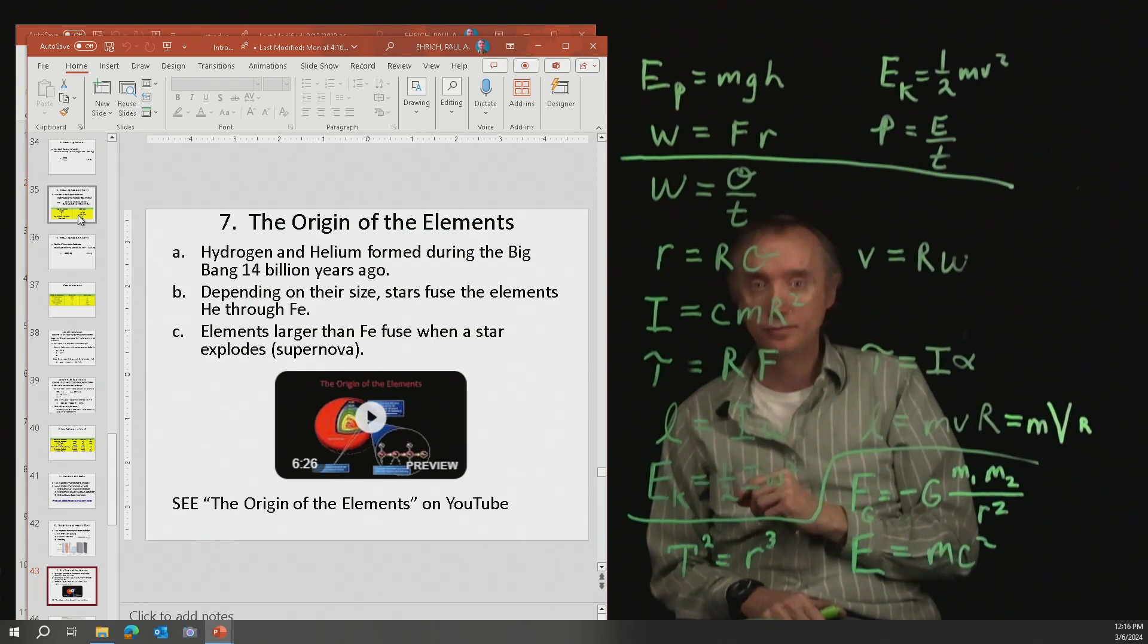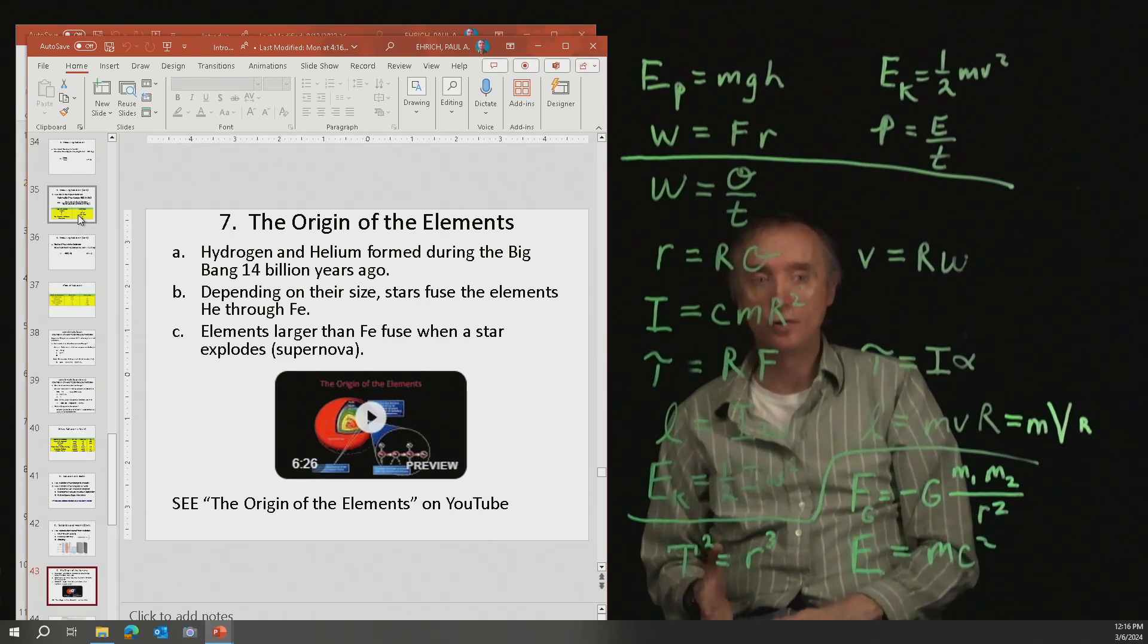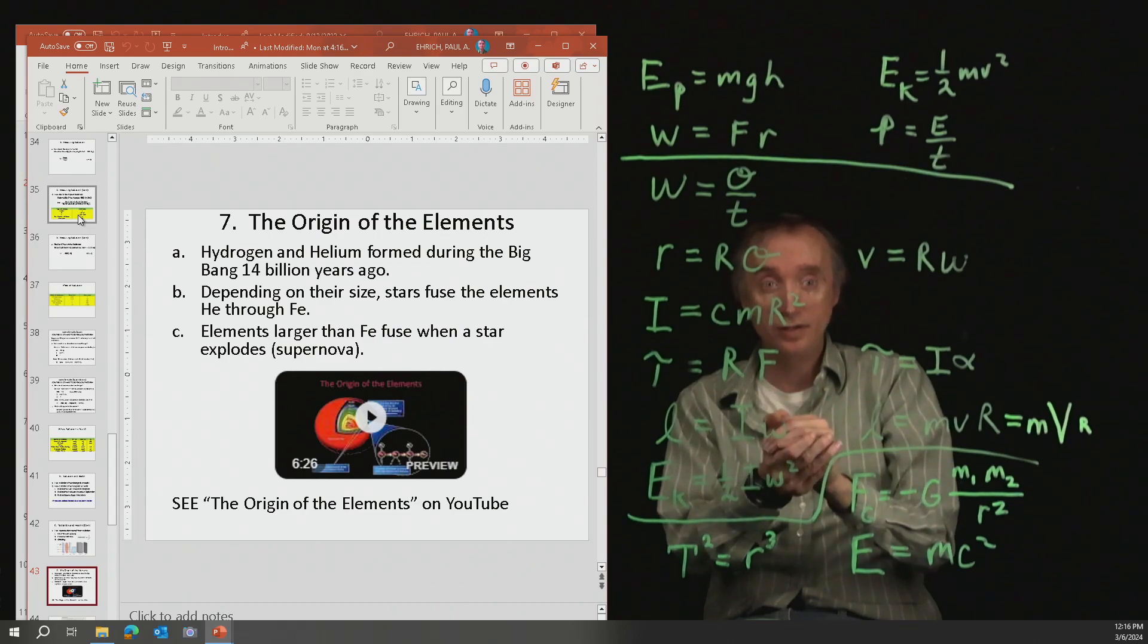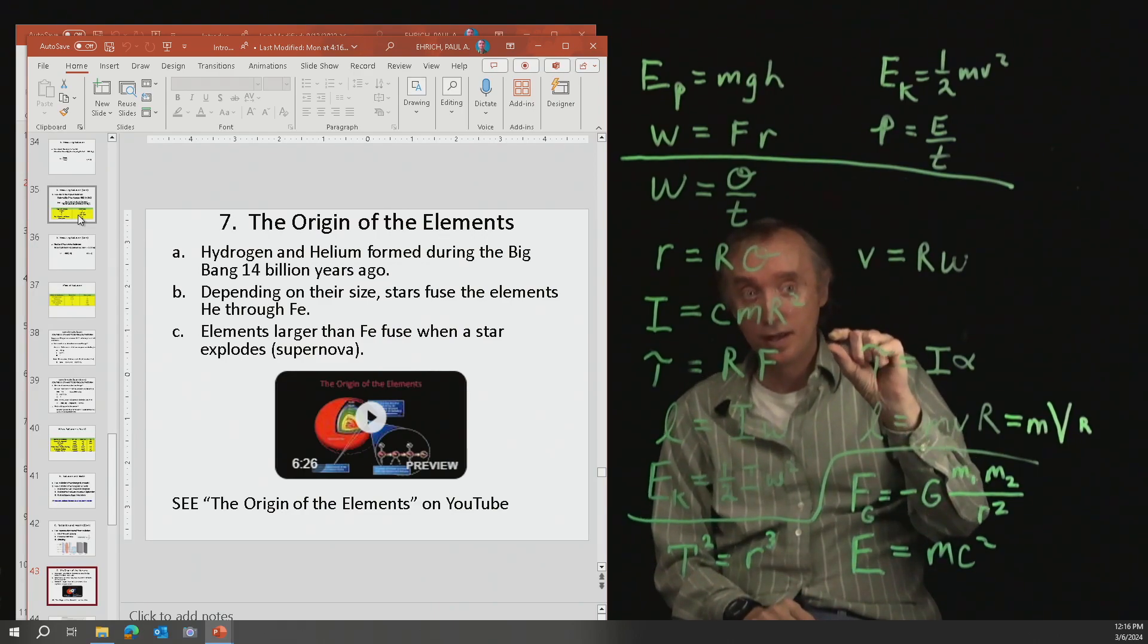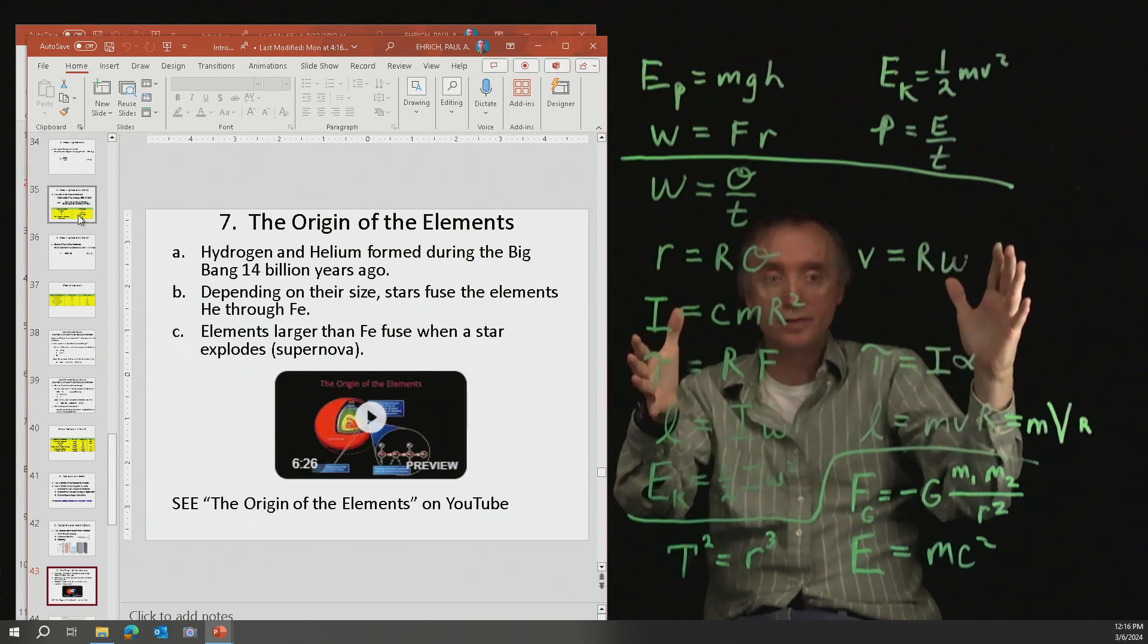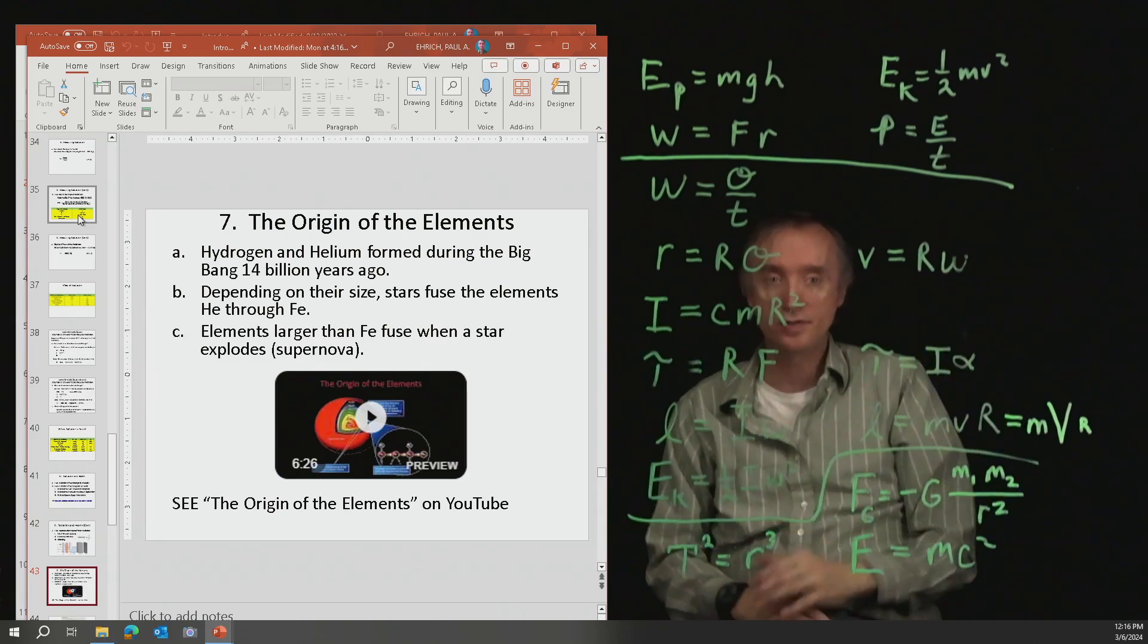Number one, the Big Bang. We think that when the universe first formed, it started out as a kernel of energy, incredibly small and incredibly hot. And then as it expanded, it expanded space and time and cooled off to everything that you see today.